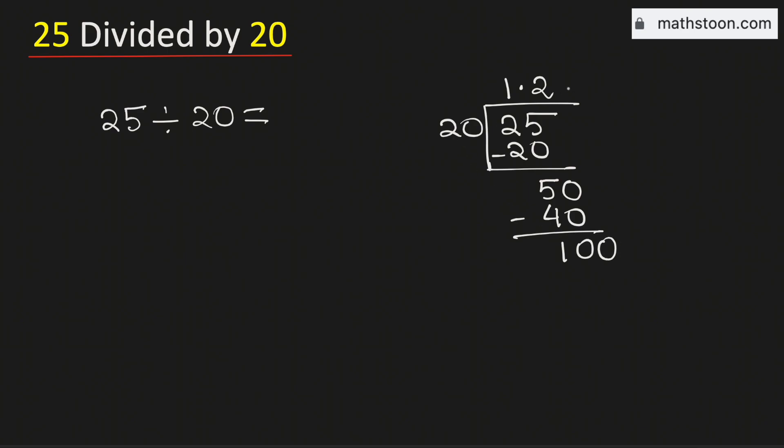And we know that 20 times 5 is equal to 100. Subtract we get zero. As we have obtained the number zero so we will stop.